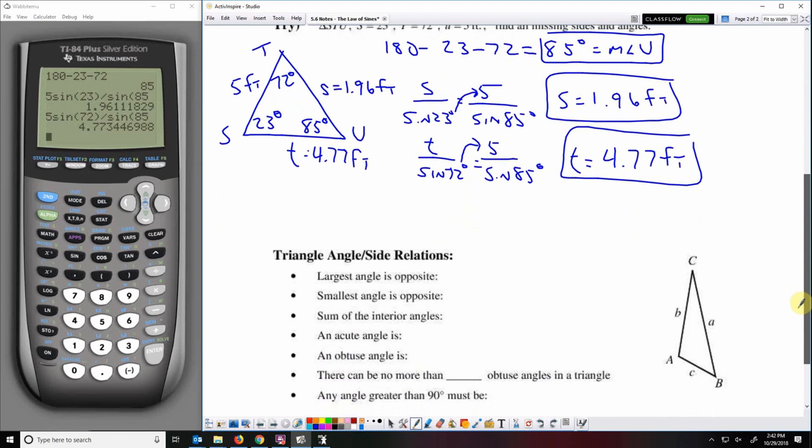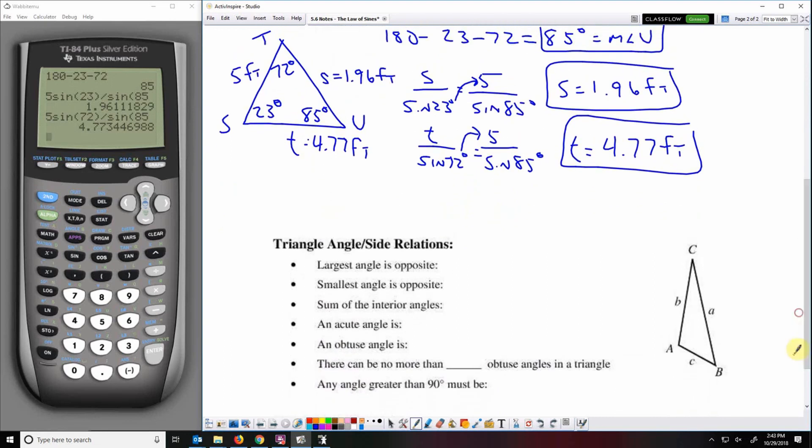Some things to look out for that might help you know if your answers make sense. The largest angle should always be opposite the longest side. The smallest angle should always be opposite the shortest side. Your interior angles should always add up to 180 degrees. So if any of these conditions are not met, then your answer is probably not correct.